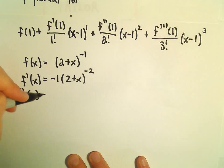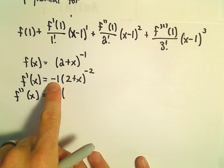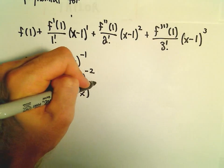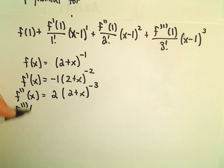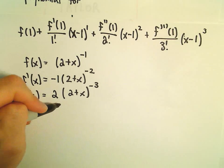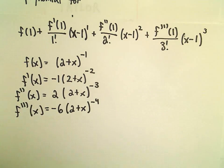f double prime of x is going to be 2, so negative 2 times negative 1 will give us positive 2 and then 2 plus x to the negative third power. And then we'll have f triple prime of x, so we'll get negative 3 times 2 which is negative 6, and then 2 plus x to the negative fourth power.